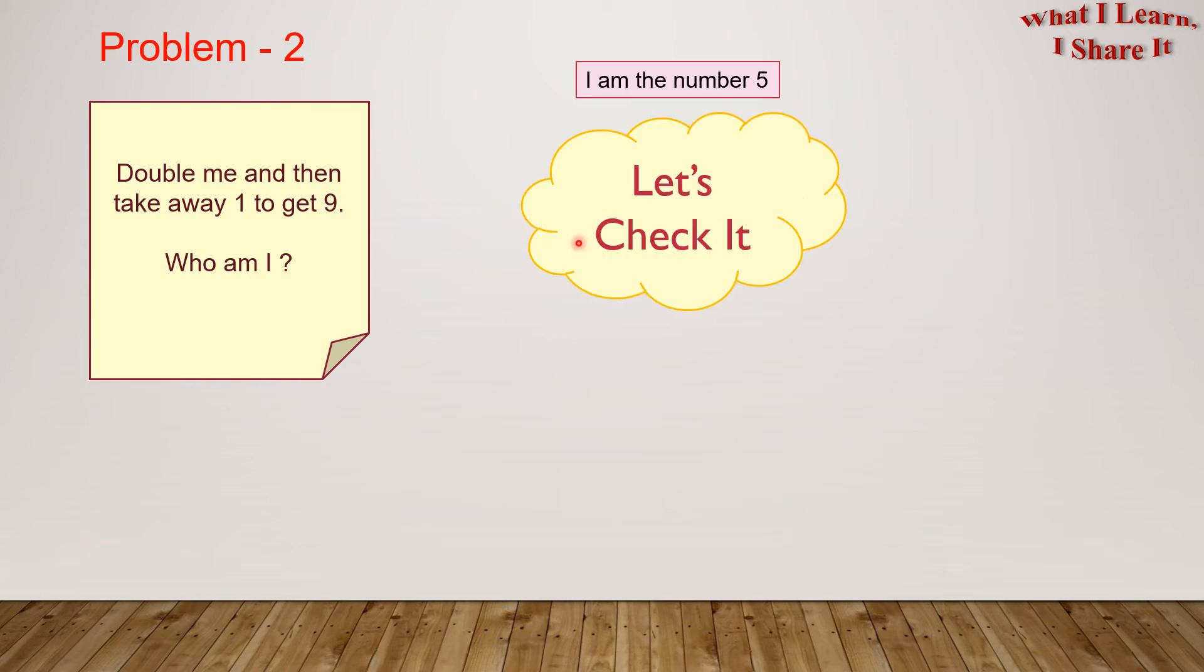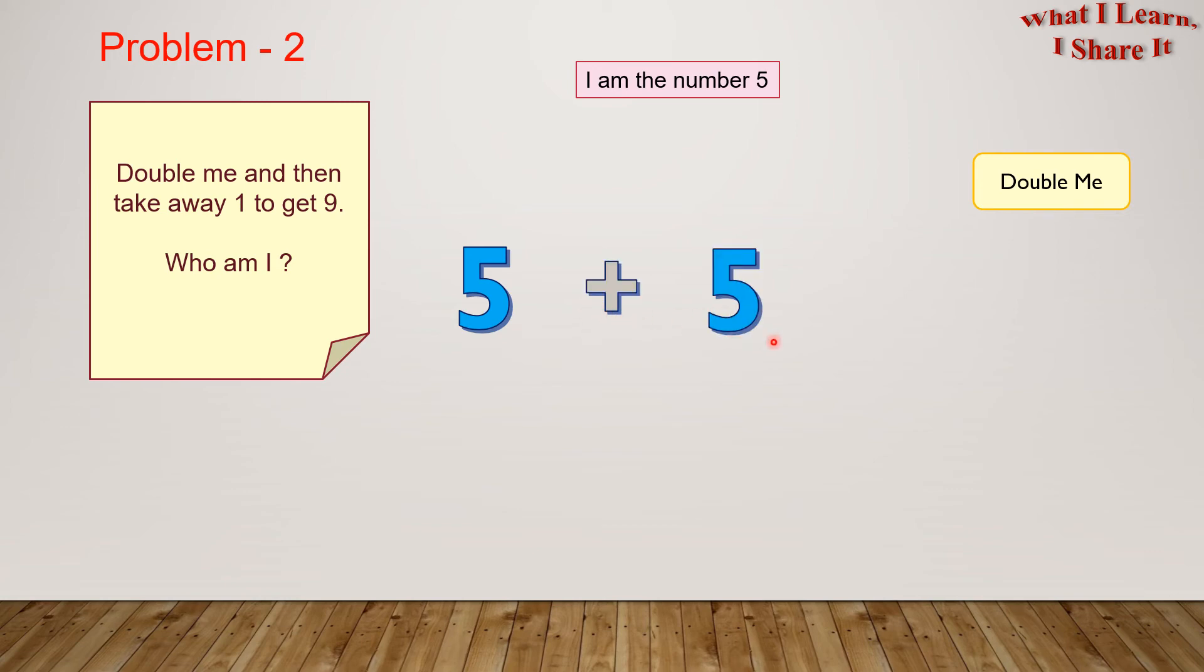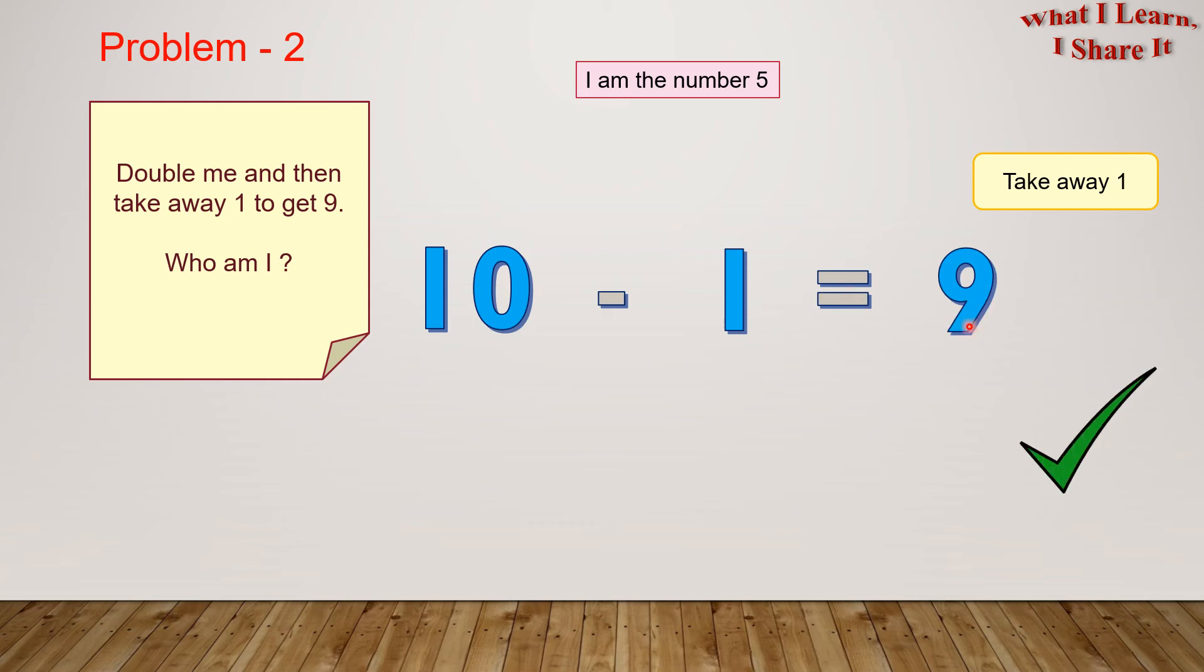Now we have our answer. Let's check it. Here we have 5. And the first clue is double me. We have to do 5 plus 5 equals to 10. Here we have 10. Now, the next clue is to take away 1. 10 minus 1 equals to 9. And since 9 is over here, and also in our problem, this means our answer is correct.